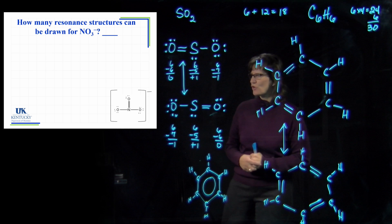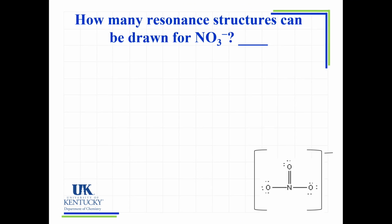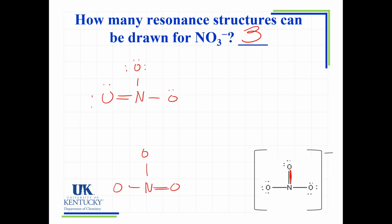Now you try one: how many resonance structures can you draw for NO3 minus? We've drawn one Lewis structure of this ion before. The answer is three. The extra two electrons that make up the double bond could be placed between nitrogen and the top oxygen, the right oxygen, or the left oxygen. So we get three structures: double bond to the top with singles to the right and left; double bond to the right with singles elsewhere; and double bond to the left with singles elsewhere — all with lone pairs filling out octets and a minus charge on the outside.